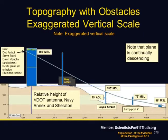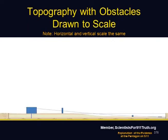If we put the obstacles on there, we have the Sheridan on the left-hand side, the V-dot tower, the Navy Annex, the location near the Citgo station, lamppost number one, the generator trailer, and the impact area of the Pentagon. If we draw it to scale so that the vertical and horizontal are about the same, this is what we would get.